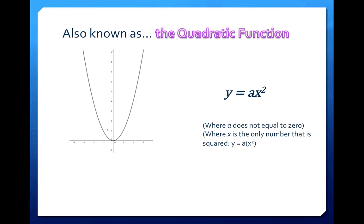Also where x is the only number that is squared. So you can look at it as like y equals a brackets x squared. Your a is not squared.